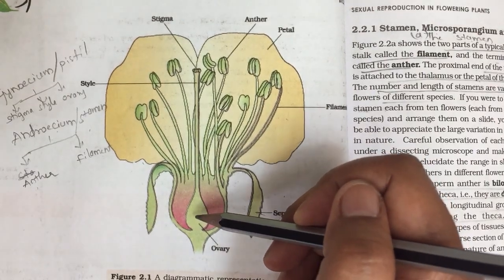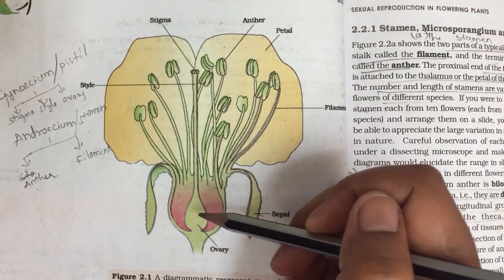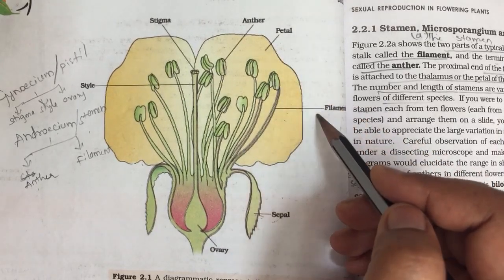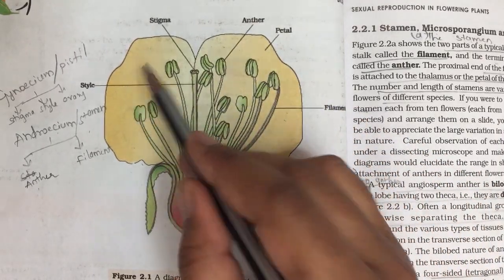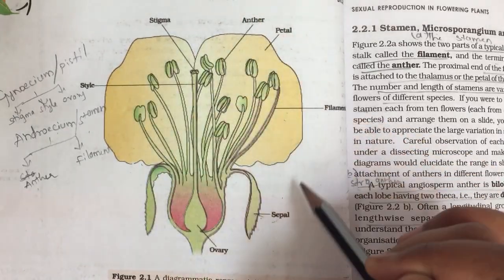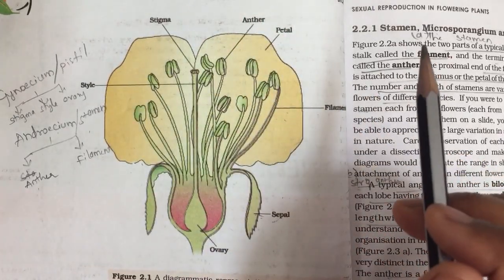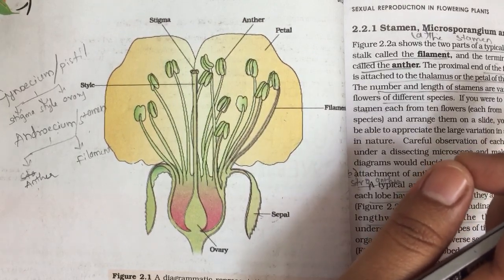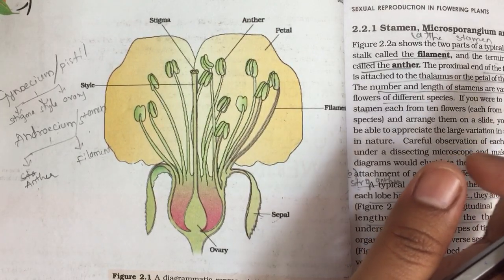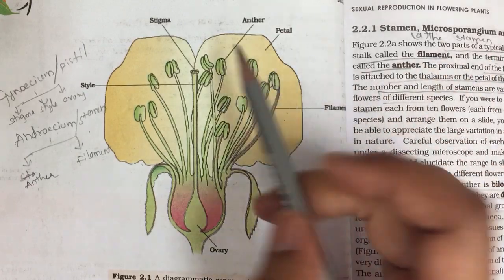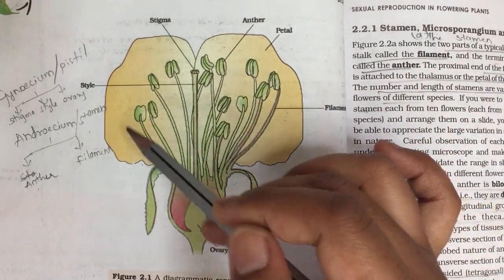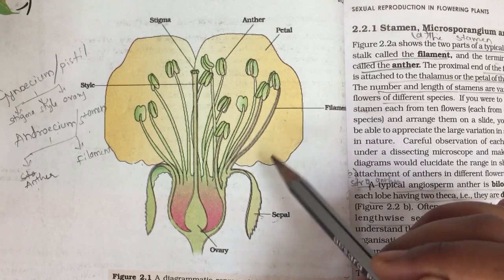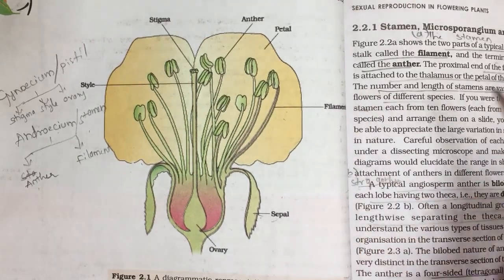The diagram shows the ovary, sepal, petal, filament, anther, stigma, and style. This diagrammatic representation is important — it has been asked as 'draw the neat labeled diagram of LS of flower' for three marks. It has not been asked as an explanation question yet, but you must be able to draw it.